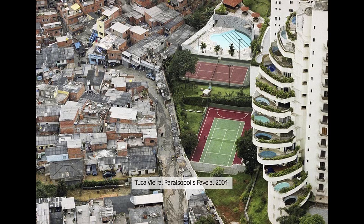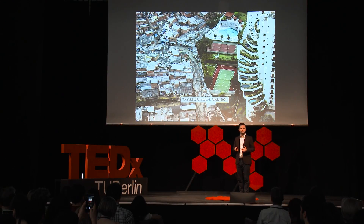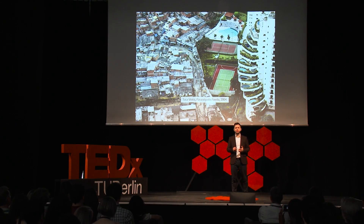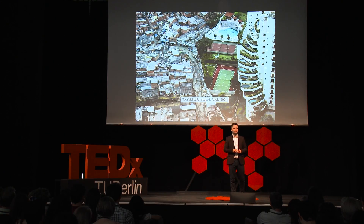This is the introduction to blockchain through the problem of inequality. This picture was taken in 2004 by Tuca Vieira in Brazil, around São Paulo. It shows a very striking contrast between rich and poor. This is an actual picture — not photoshopped. A very rich, gated neighborhood next to a favela where very poor people live.